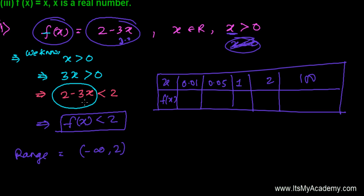Then my calculator, 2 minus 3 times 0.01 is giving me 1.97. And now 2 minus 3 times 0.05, this is giving me 1.85.